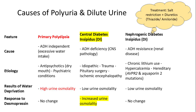Polyuria and dilute urine can result from various causes, including primary polydipsia and diabetes insipidus, which could be central with ADH deficiency, or nephrogenic with ADH resistance. We do water deprivation tests initially, which identifies primary polydipsia as urine osmolality increases.